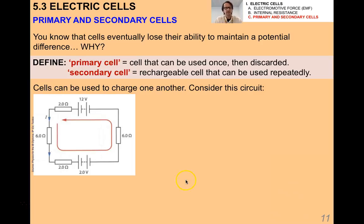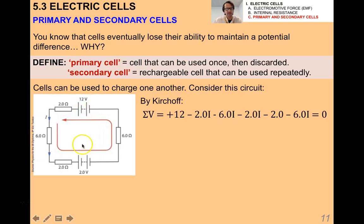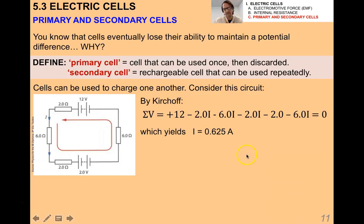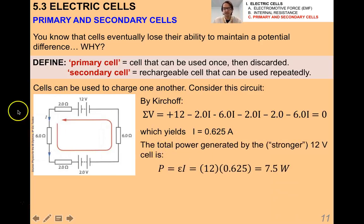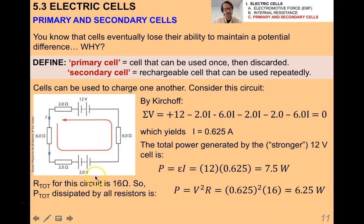Cells can be used to charge one another. In this circuit there's a 12-volt battery and a 2-volt battery — the stronger 12-volt battery can charge the 2-volt battery if it has the chemical makeup to be recharged. By Kirchhoff's voltage law, the sum of voltages is zero, and working through the algebra yields a current of 0.625 amps through the circuit. The total power generated by the stronger battery is 7.5 watts. The total resistance for the entire circuit is 16 ohms (6 + 6 + 2 + 2 + 0 = 16), so the total power dissipated by all the resistors is 6.25 watts.